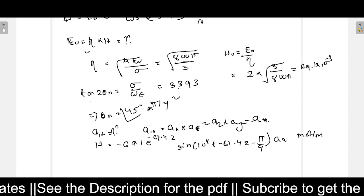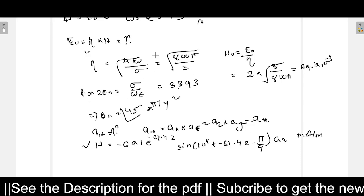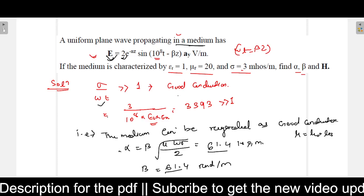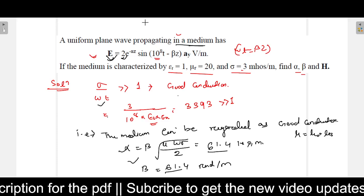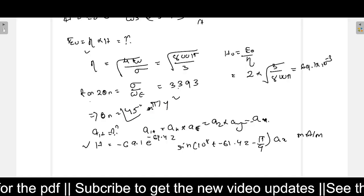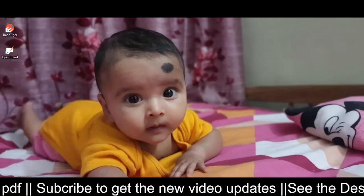So now this is the answer to this question. This is the final answer expression for H, and this is where you calculate the values of alpha, beta, all these values. In the next video, I will upload more problems on electromagnetic wave propagation. Keep visiting and subscribe.